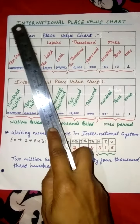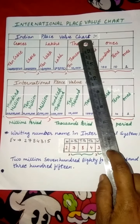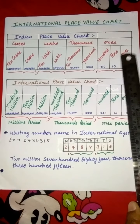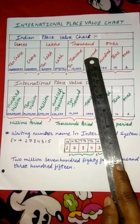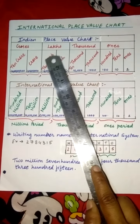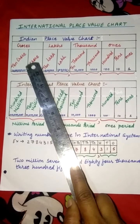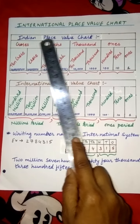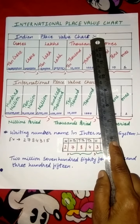See this — this is the Indian place value system chart. The number starts from 1's, 10's, 100's — this is called the 1's block. Then 1000's and 10,000's — this is called the 1000's block. Then lakh and 10 lakh — this is called the lakh's block. And crore and 10 crore — this is called the crore's block. This is our Indian place value system.